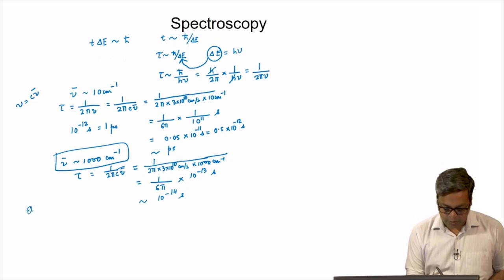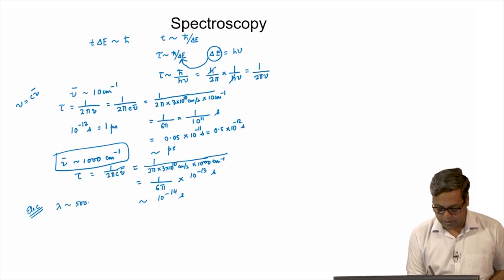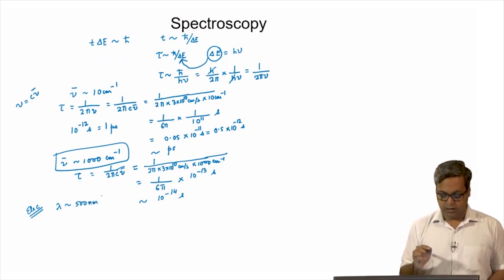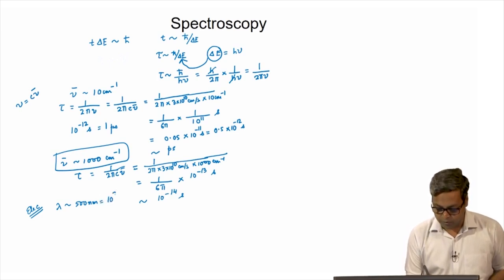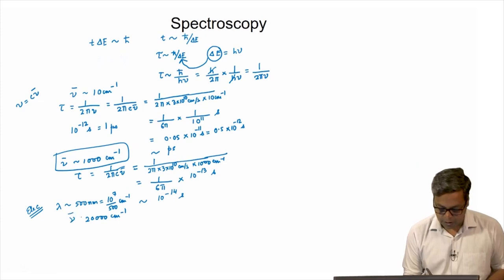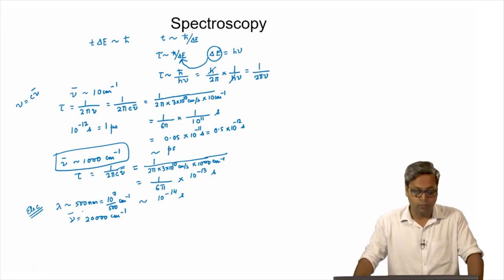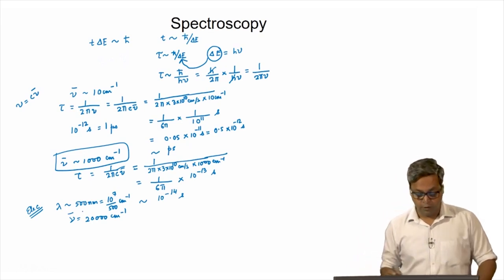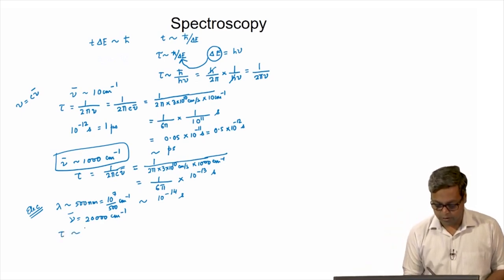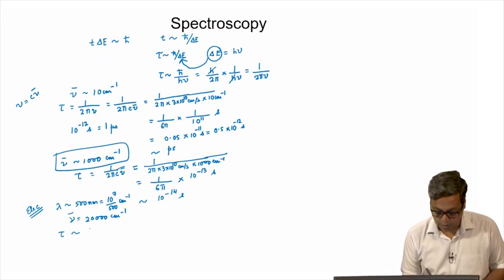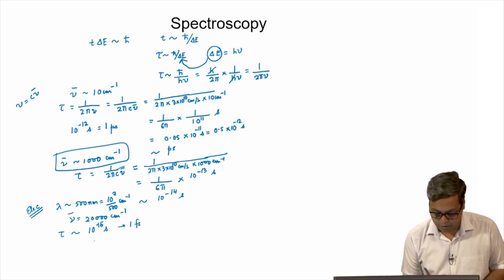Now let us look into the electronic transition. For the electronic transition, let us say lambda is 500 nanometers. Converting to wave numbers: 10⁷ by 500 equals 20,000 wave numbers. The wave number for an electronic transition is 20 times more compared to that for a vibrational transition. Doing the same calculation, the time scale for electronic transition is in the order of 10⁻¹⁵ seconds, and 10⁻¹⁵ seconds equals 1 femtosecond.